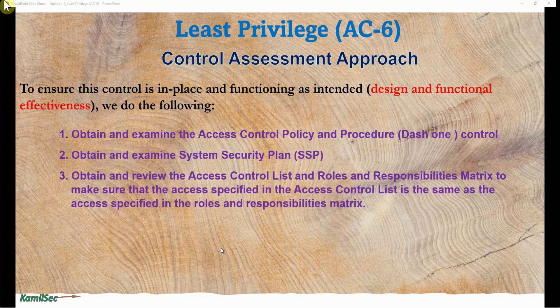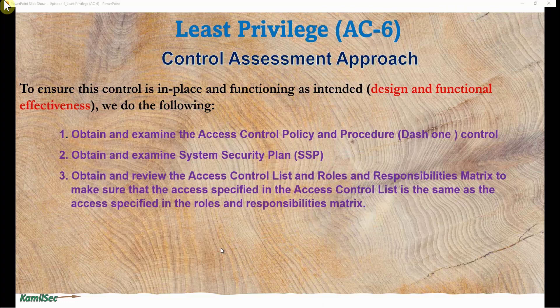The access control list shows you the actual level of access configured for each individual within the system. You then compare that against the roles and responsibility matrix, which tells you what roles each individual should have. For example, the access control list may show a user has admin or developer access provisioned on the system, while the roles and responsibility matrix says that individual is a regular user. It could be a documentation issue — you can bring that to management's attention. They can fix it easily, but it is important to flag.